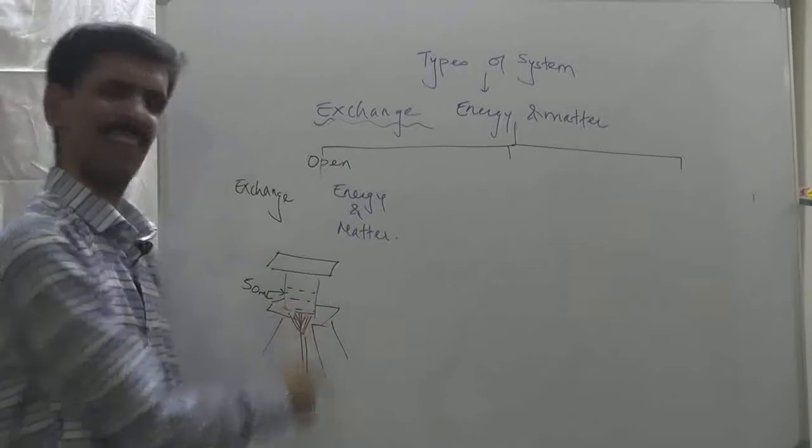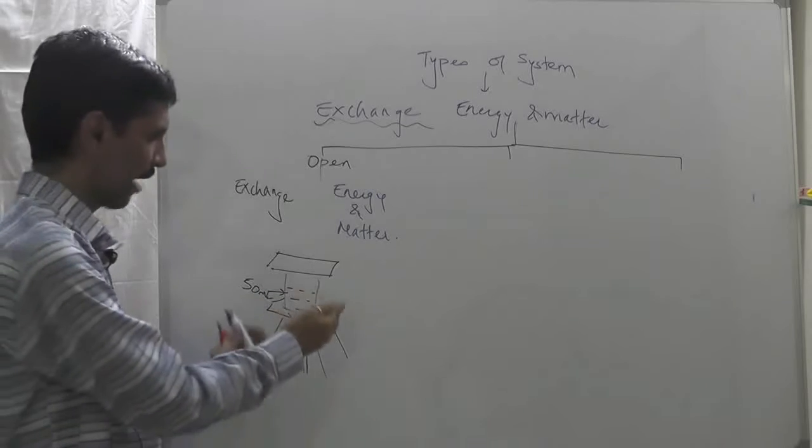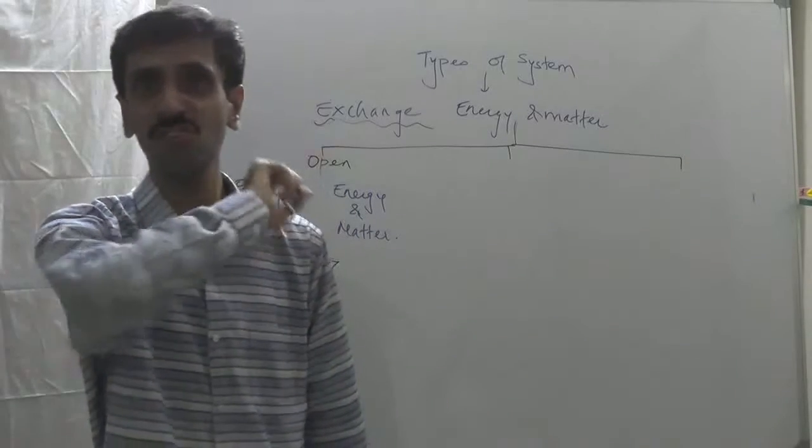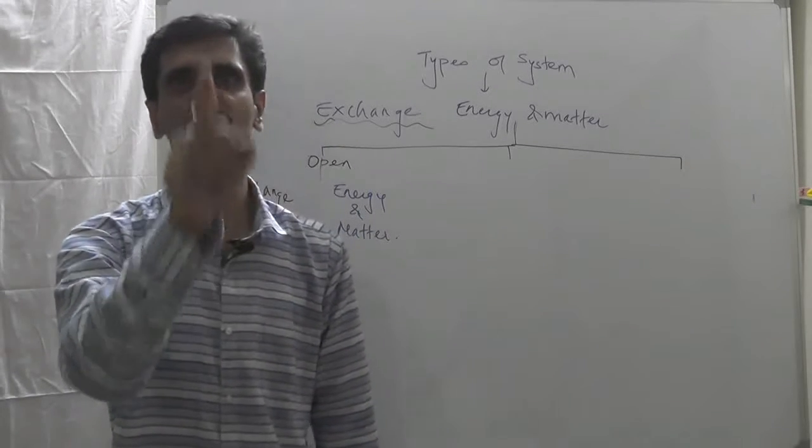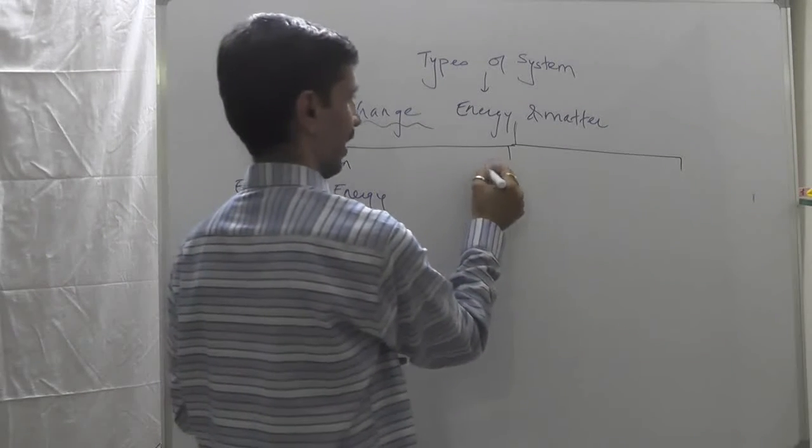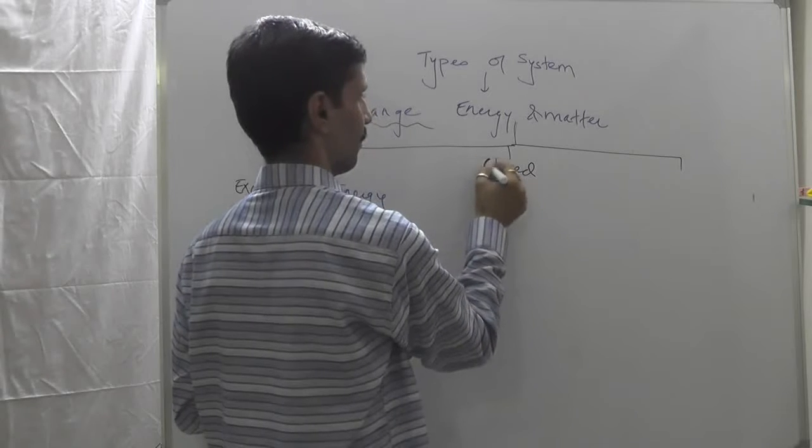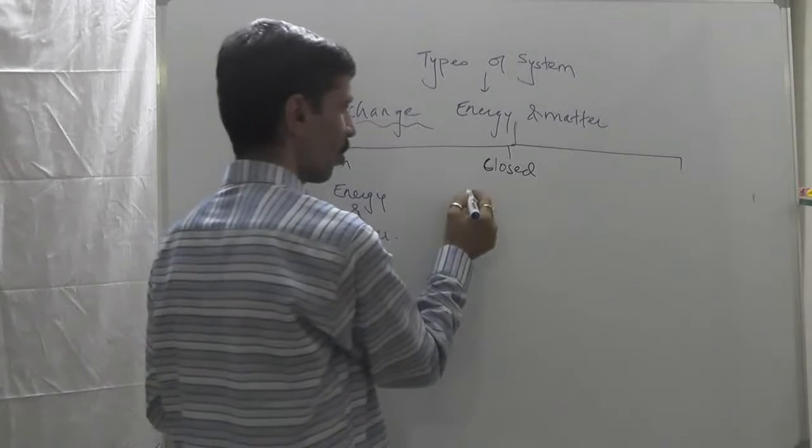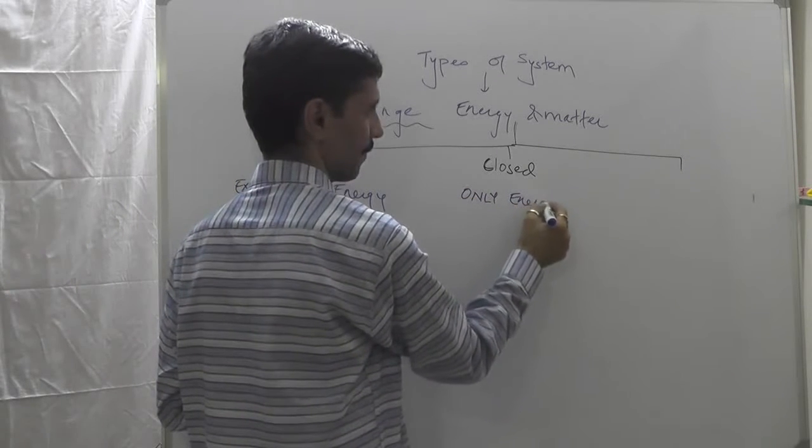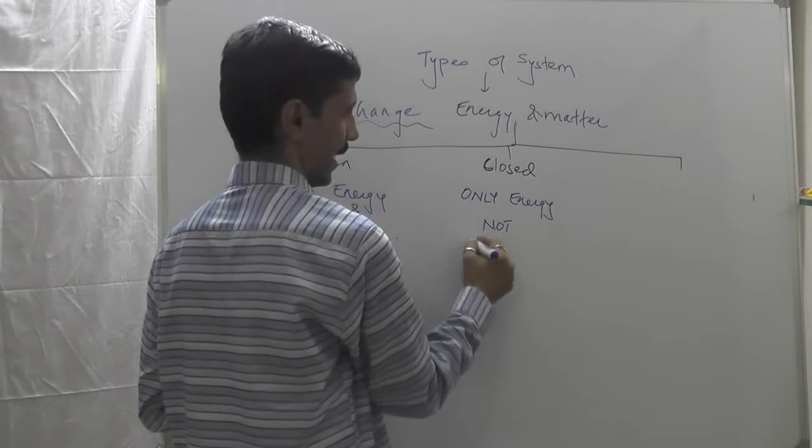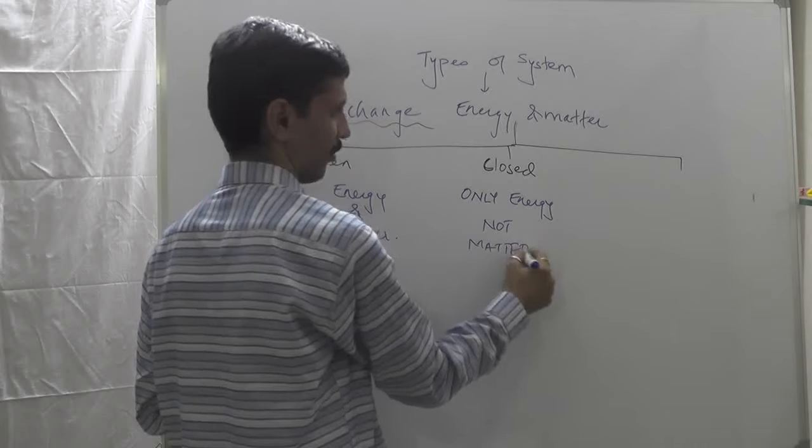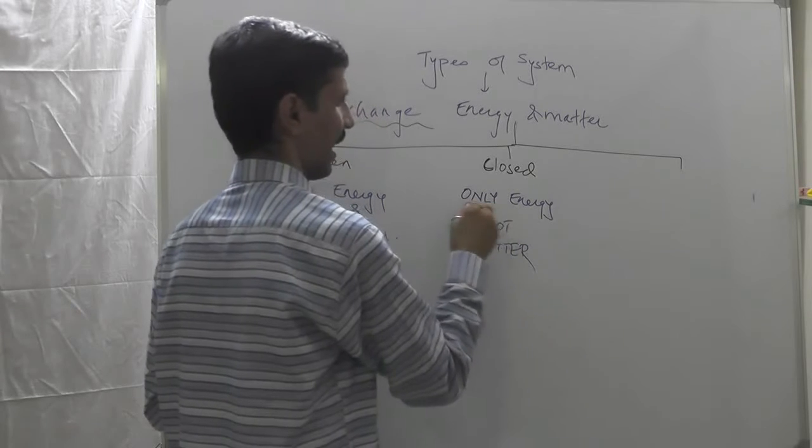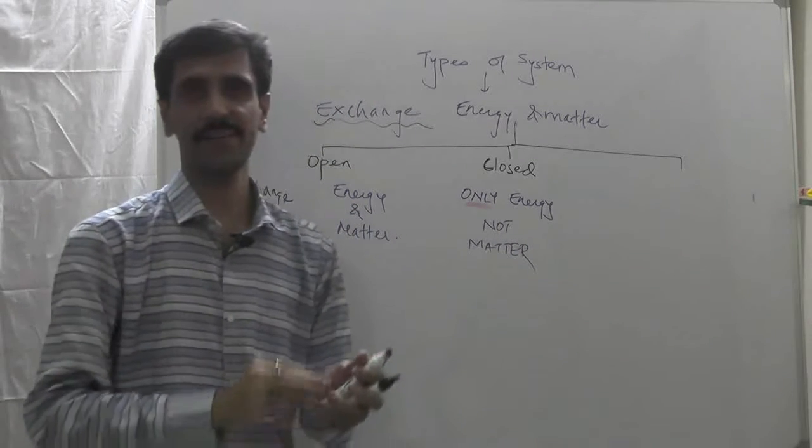Tell me now, is there any change as far as the amount of water is concerned? No, it still remains 50 ml in the system. Therefore I will say is there an exchange of matter? No. But energy is being exchanged. Energy ka exchange ho raha hai, but matter ka exchange nahi ho raha hai. And such system is called as closed system. So the second one is closed system. And that is only energy, not matter. Understood this very well?